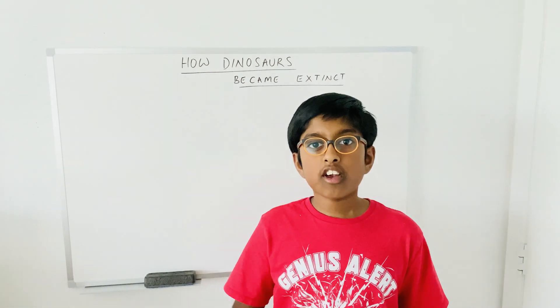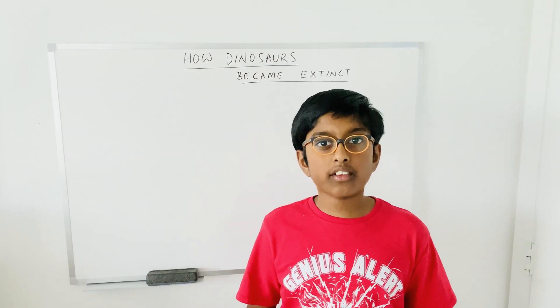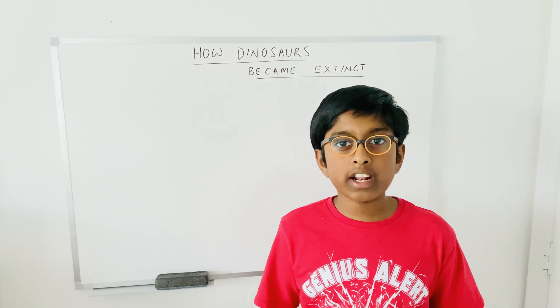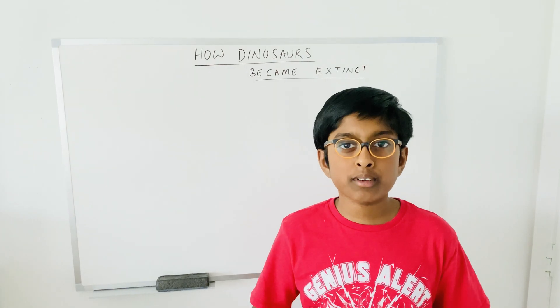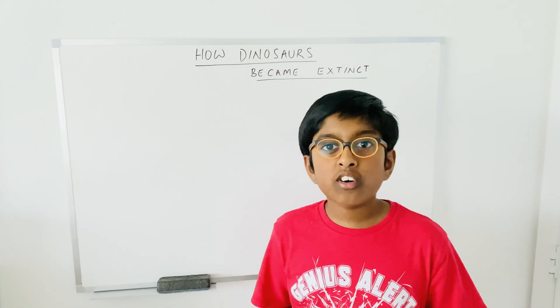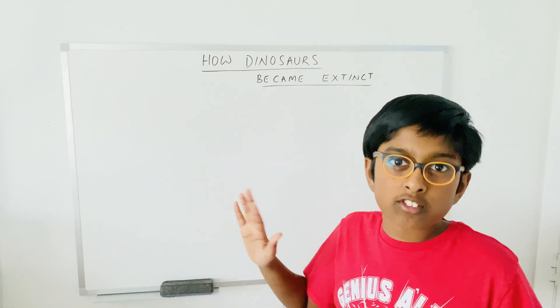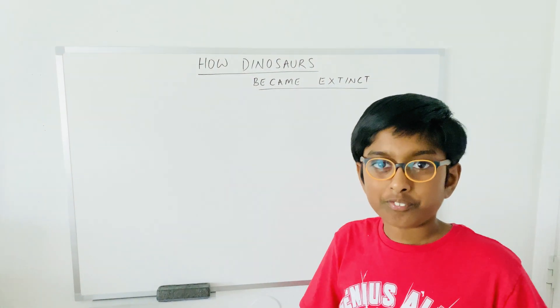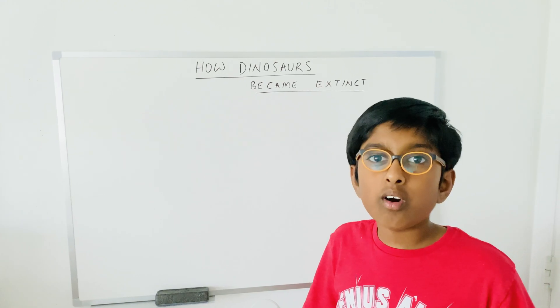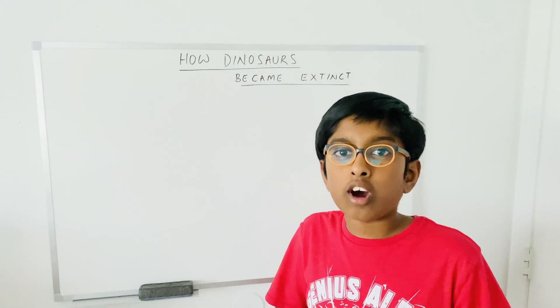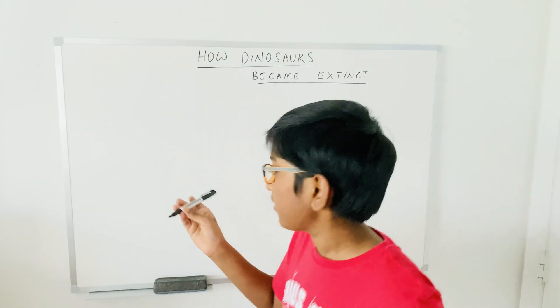Hi guys, my name is Reena Tamana. I'm in sixth grade and I'm at Wardrobes Middle School. Today's topic is how dinosaurs became extinct, and we're going to be talking about the whole topic of this.